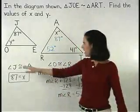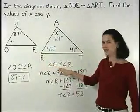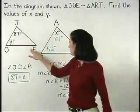And remember that angle O is congruent to angle R, so Y equals 52.